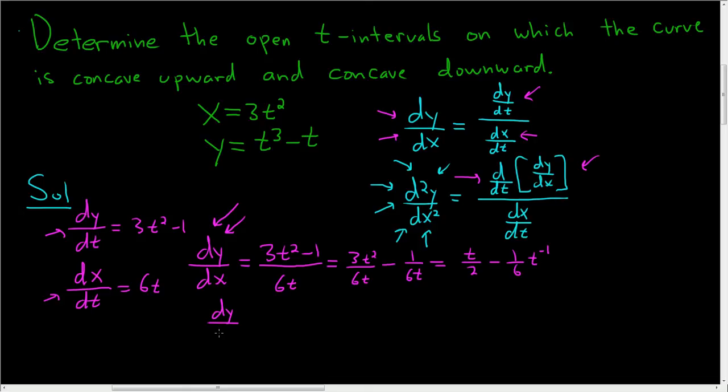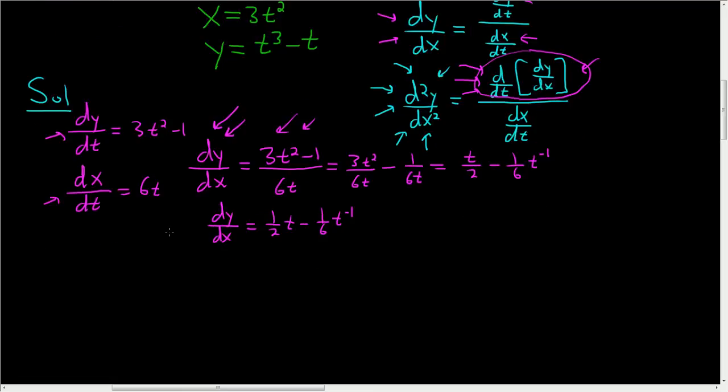So dy/dx, we simplified it to 1/2 t minus 1/6 t to the negative 1. And again, the reason we did this is because we have to compute the second derivative. And right here, it says to take the derivative of dy/dx with respect to t. So I really wanted to avoid using the quotient rule. All right, let's go ahead and use that second formula and finish up.